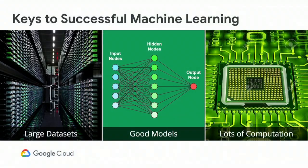To build a good model for land cover, we need a couple of things: big data — Nick was talking about 50 petabytes and growing in Earth Engine — good models, which TensorFlow brings to bear, and a ton of computation, some of which is on Earth Engine, but not all of it.